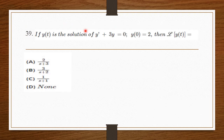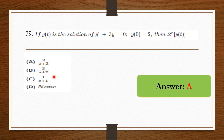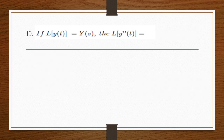If y(t) is the solution of y′ + 3y = 0 with y(0) = 2, then the Laplace transform of y(t) — using the differentiation property, since y′ means dy/dt, the answer is 2/(s + 3). Option A is the right answer.